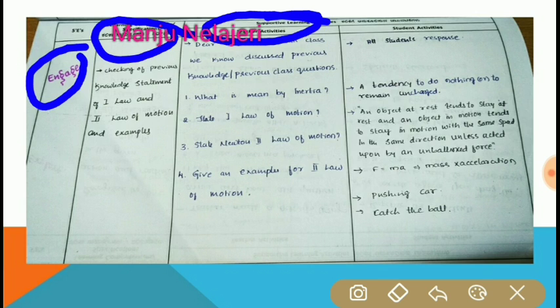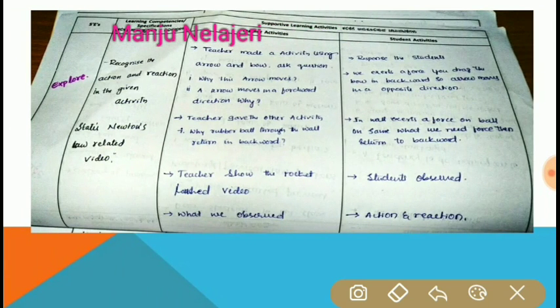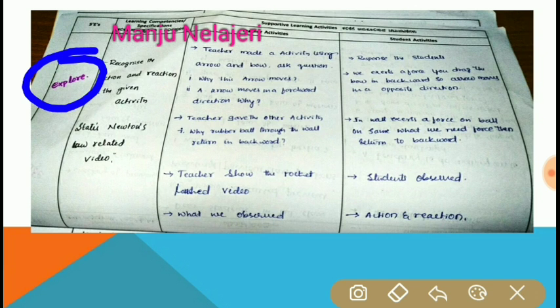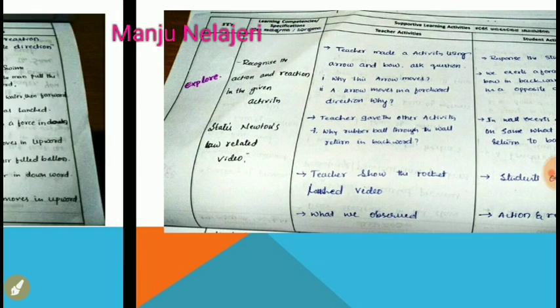Different modes are conducted during the Engage stage. On the right side is written the student activity. The next stage after Engage is Explore — the second stage of PIES. Same as before, learning competencies, teacher activities, and student activity are written for the Explore stage.